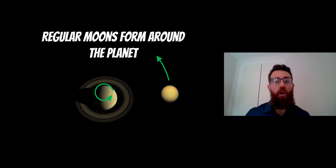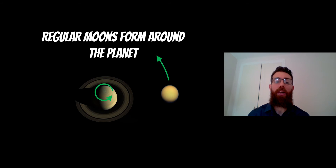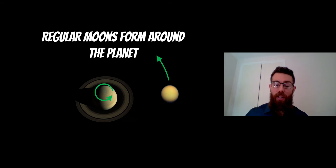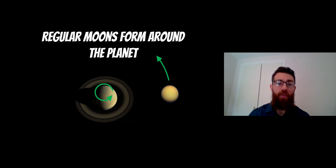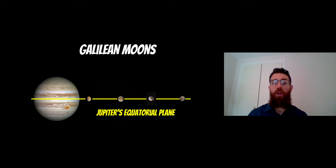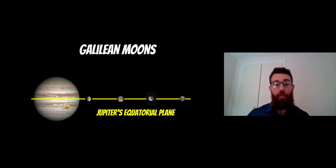Regular moons are thought to form around the planet. Because they form around the planet, their orbits are in the same direction as the planet rotates. As an example, we have Titan, which is a moon around Saturn — it is classified as a regular moon, and it's orbiting in the same direction that the planet rotates. This is fairly typical of a regular moon. Another key feature is that they orbit in the same plane as the planet's equatorial plane.